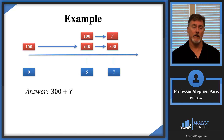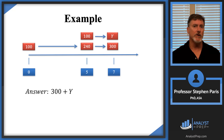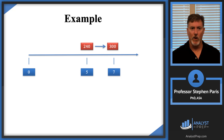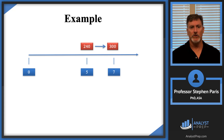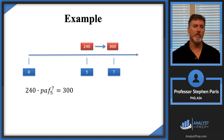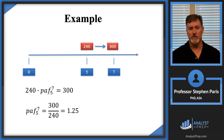To determine the value of cap Y, let's focus on the part of the timeline where the 240 at time 5 accumulates to 300 at time 7. From that information, we know the 240 times the periodic accumulation factor from time 5 to time 7 equals 300. Solving for that factor by dividing by 240, we get 1.25.